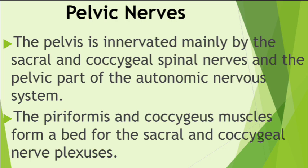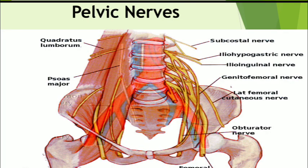The pelvis is innervated mainly by the sacral and coccygeal spinal nerves and the pelvic part of the autonomic nervous system. The piriformis and coccygeus muscles form a bed for the sacral and coccygeal nerve plexuses. The anterior rami of the S2 and S3 nerves emerge between the digitations of the piriformis and coccygeus muscles.